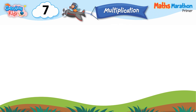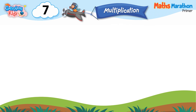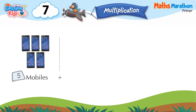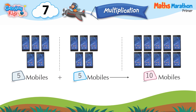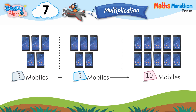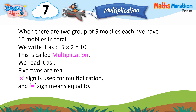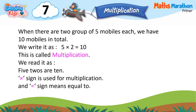Lesson 7: Multiplication. 5 mobiles plus 5 mobiles is equal to 10 mobiles. When there are 2 groups of 5 mobiles each, we have 10 mobiles in total. We write it as 5 multiply 2 is equal to 10. This is called multiplication.